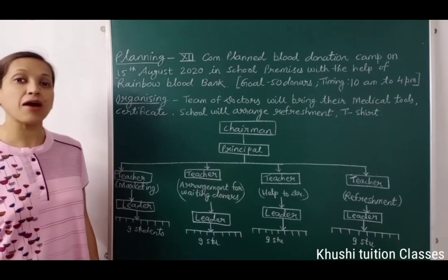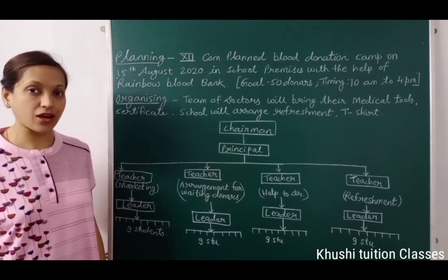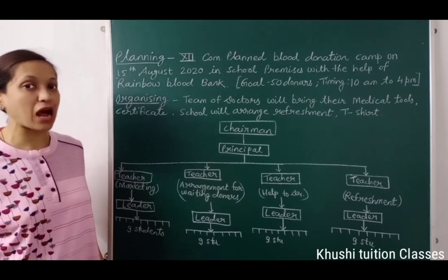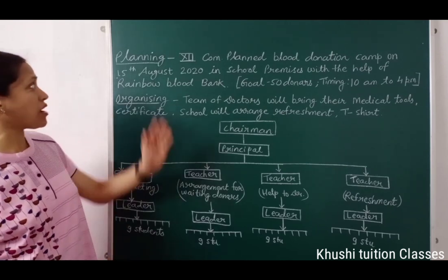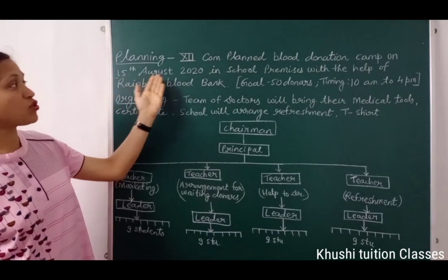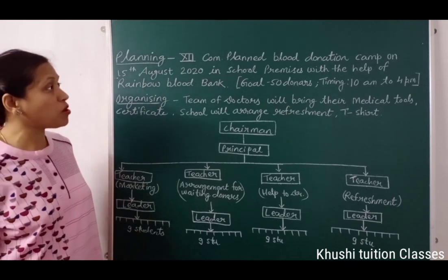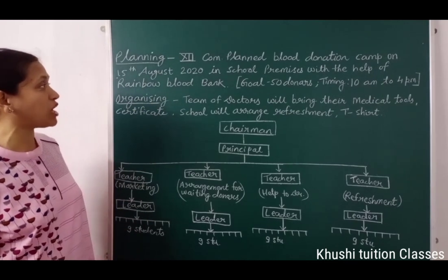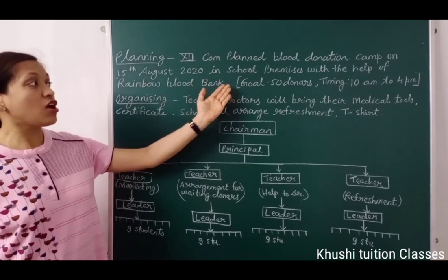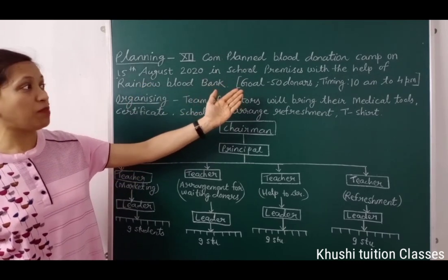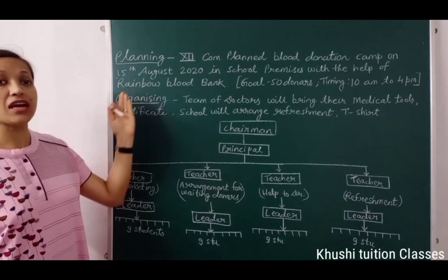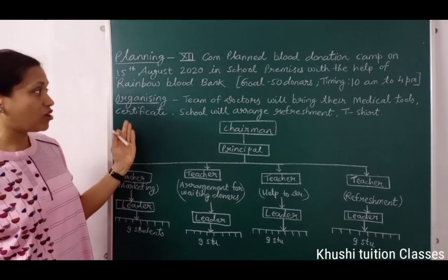अब organizing समझने के लिए हम एक example का use करते हैं. Organizing करने से पहले आपके पास एक specific plan होना चाहिए. हमारा plan है: 12th Commerce Plan — Blood Donation Camp on 15th August 2020 in school premises with the help of Rainbow Blood Bank. यह एक specific plan है और हमारा goal है, camp की timing 10 a.m. to 4 p.m. अब इस plan के according हमें resources organize करने हैं.